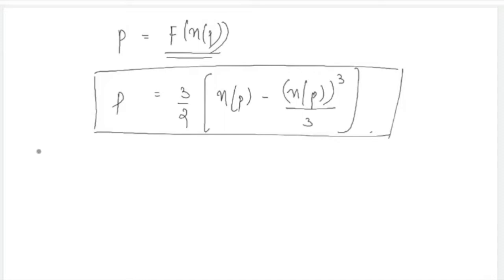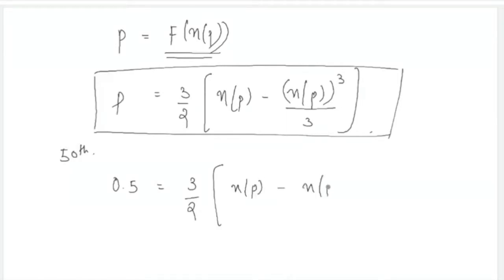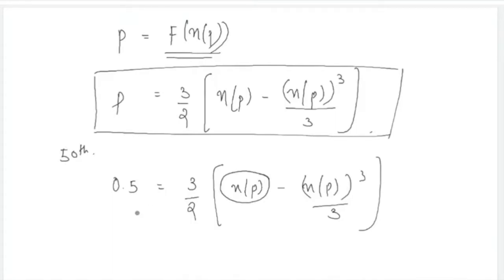For example, to calculate the 50th percentile, set p = 0.5. Substitute 0.5 into the equation and estimate the value of η_p such that the equation is satisfied. You apply algebraic properties, solve the bracket, cross-multiply, and solve the resulting cubic equation to find η_p.